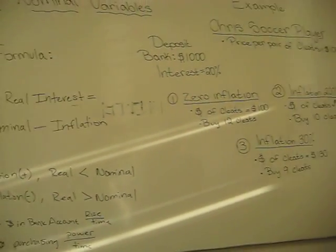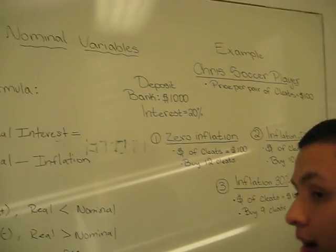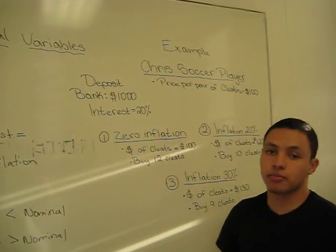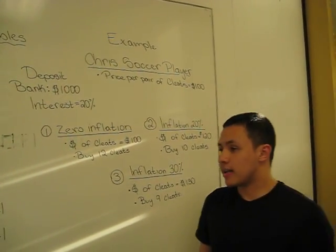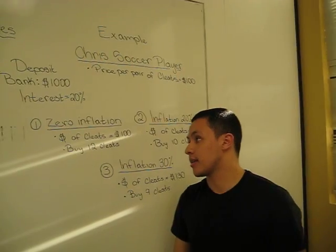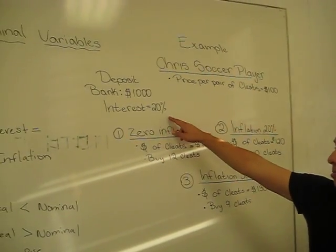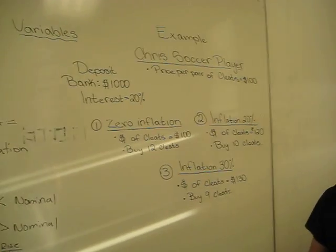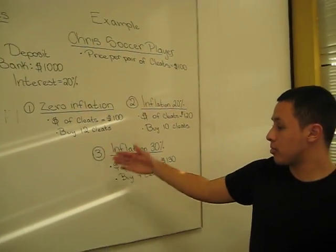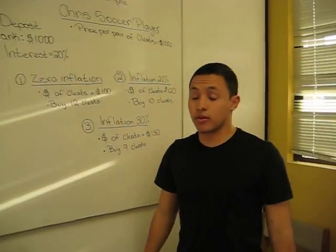Here's Luis with a hypothetical example. All right, we have Chris, who is a soccer player, and he tends to buy a lot of cleats so it can last him throughout the year. In his bank, he has $1,000 with a 20% interest rate. And here we're going to discuss how inflation will play a role in the amount of cleats he can buy throughout the year.